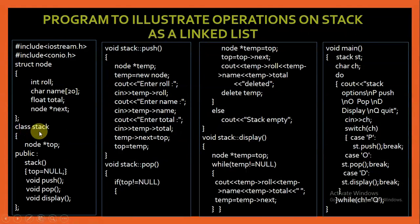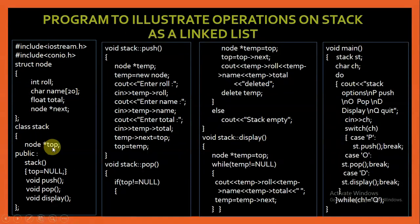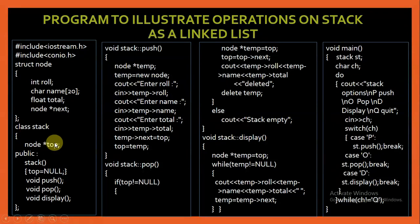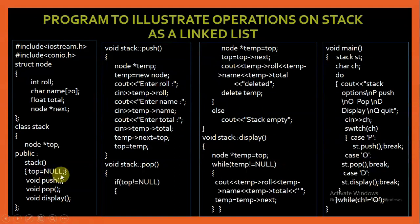Now I am creating a class stack and I am creating a pointer top which is of type node. Node is the name of this structure and I am creating a pointer of this node type because top is going to contain the address of a node. In the public section of the class, I am including a constructor which initializes top to null, and then there are three functions: push, pop, and display.